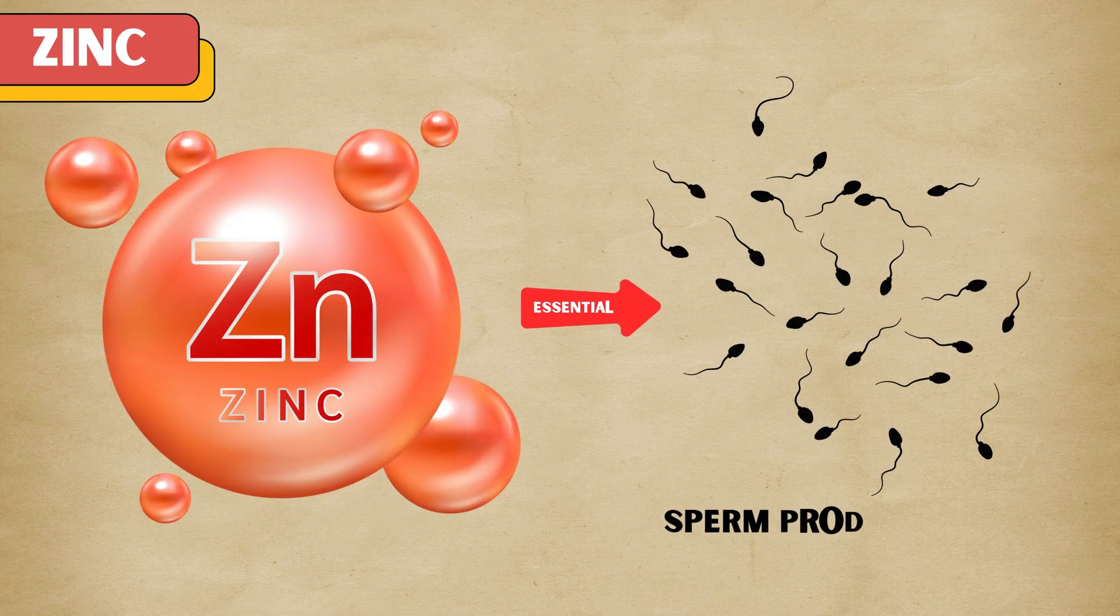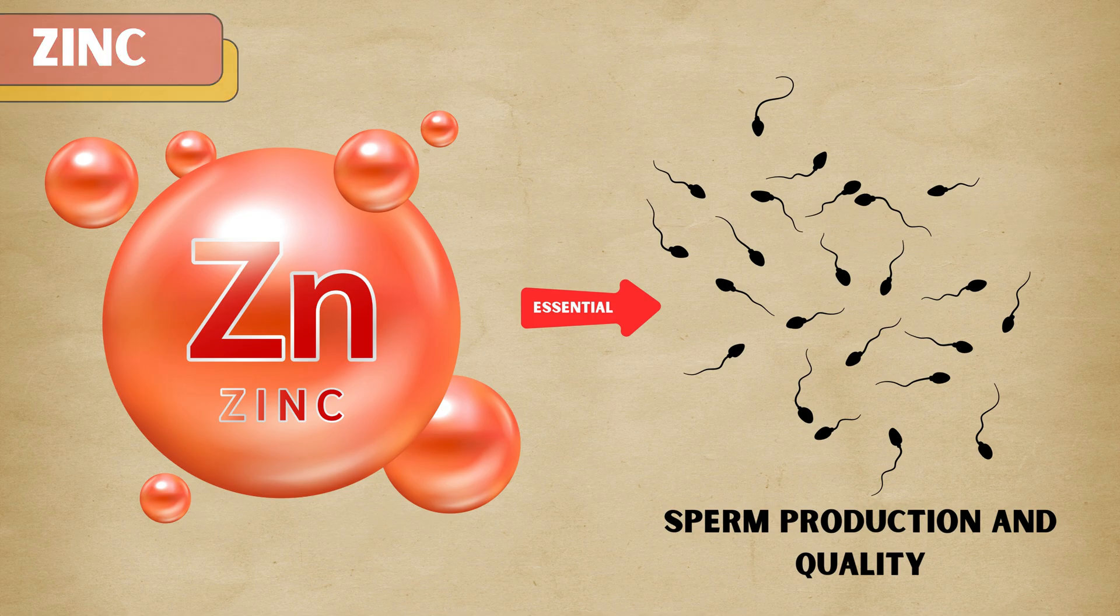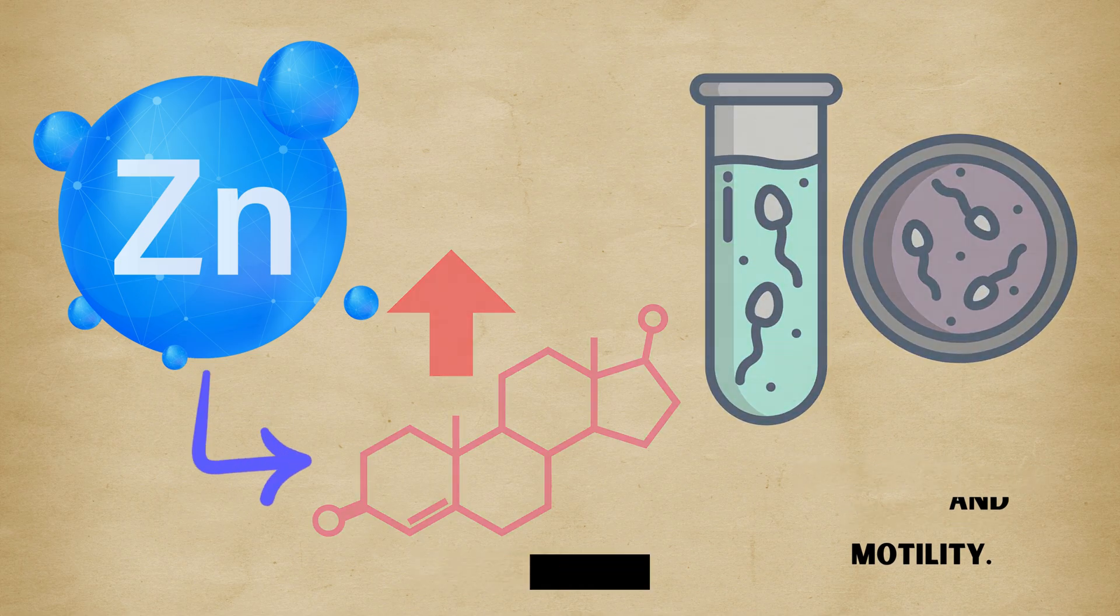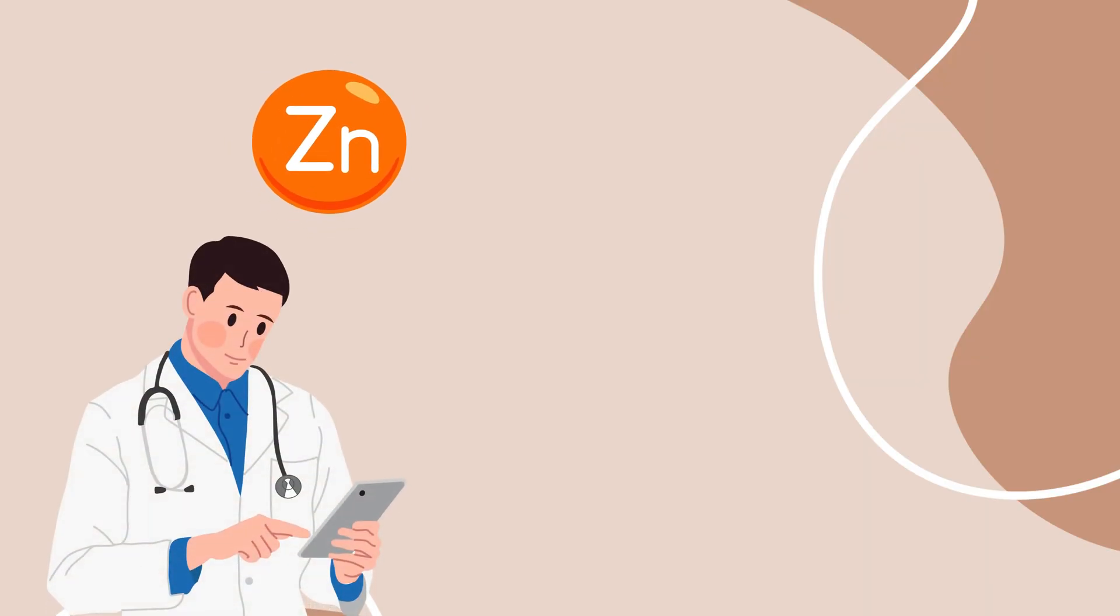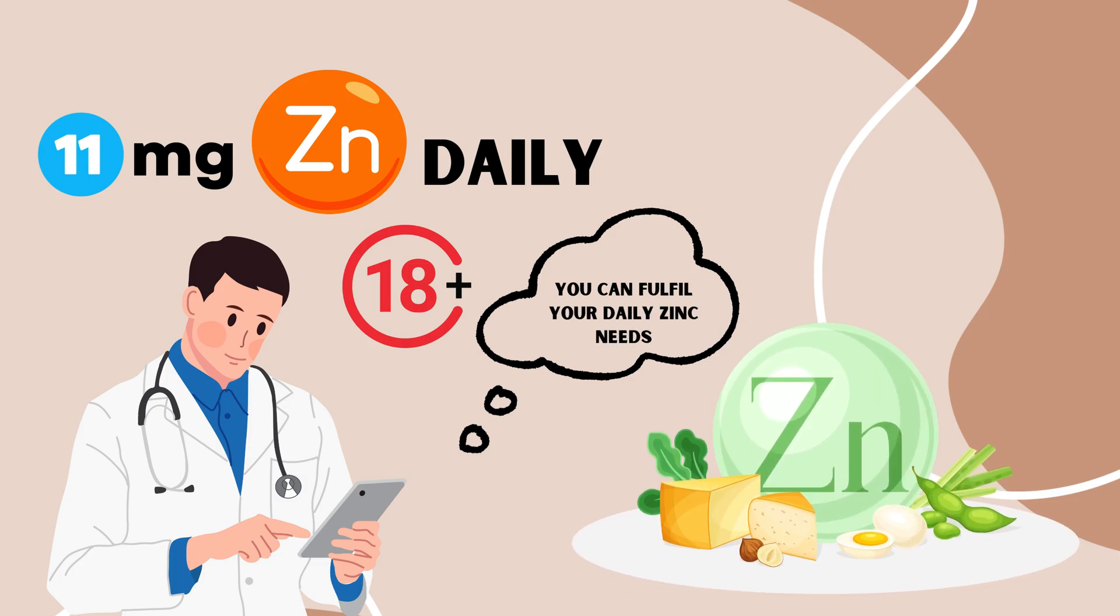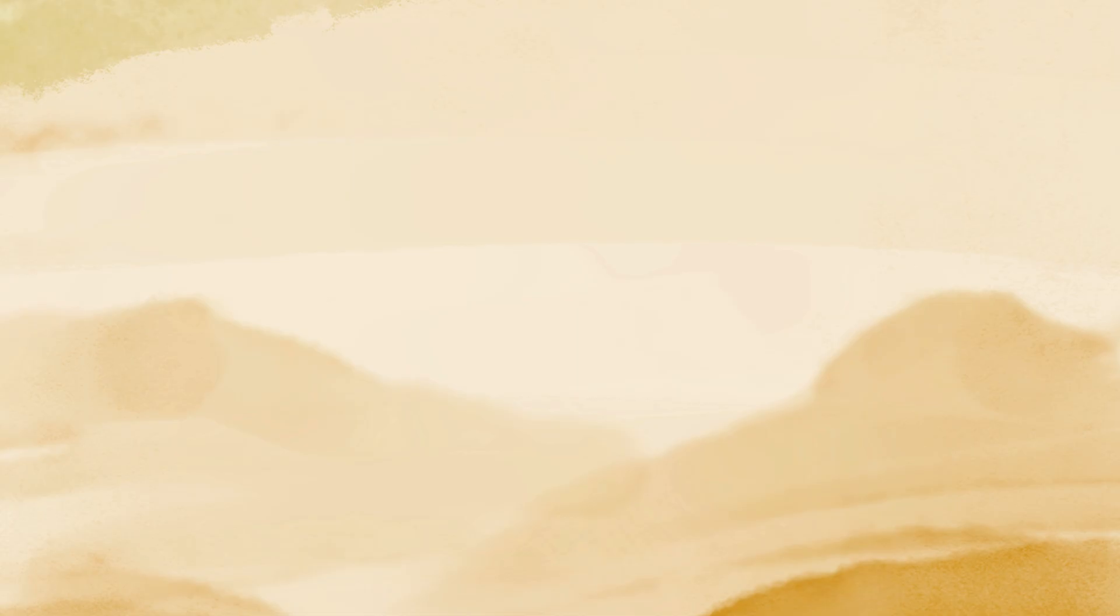First in our list is zinc. This mineral is essential for sperm production and quality. Zinc helps maintain testosterone levels and improves sperm count and motility. The recommended daily amount of zinc is 11 milligrams for adult men. You can fulfill your daily zinc needs by incorporating zinc-rich foods in your diet.